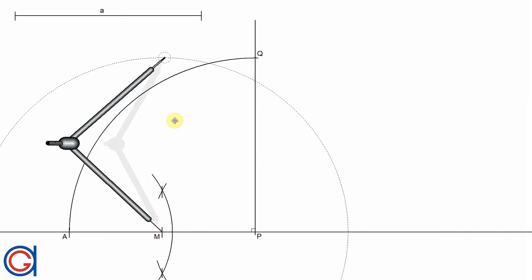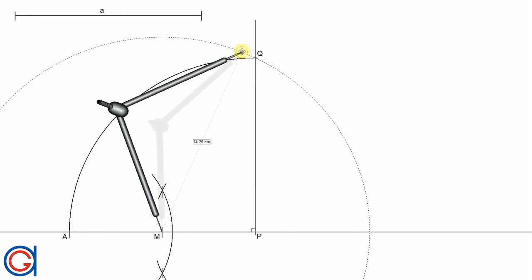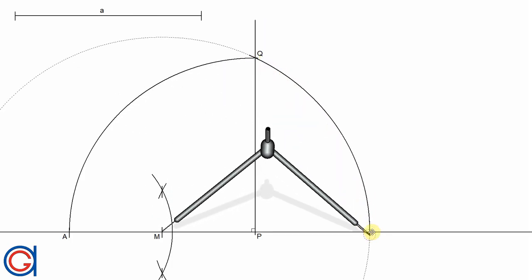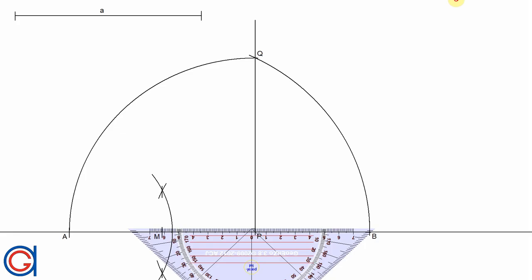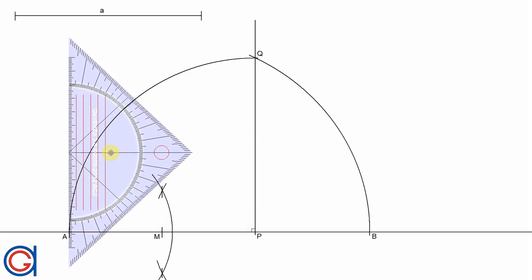The next step, setting the compass on the midpoint M and with the radius MQ, we are going to scribe an arc to the right until it cuts the horizontal line at a new point which we will call point B. And now the line segment AB is the base of the golden rectangle we are going to draw.